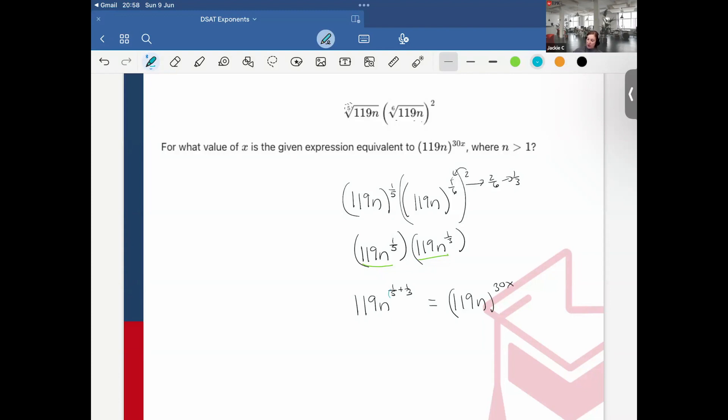Next, I need to find the common denominators of 5 and 3, which is 15. So that would be 119n. This would be 3-fifteenths plus 5-fifteenths. So basically, 119n to the 8/15 is equal to 119n raised to the 30x.